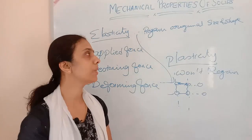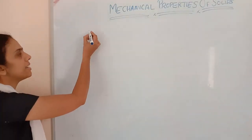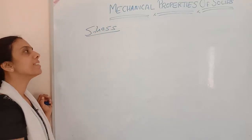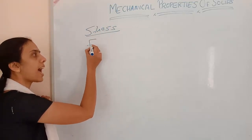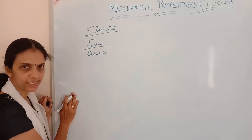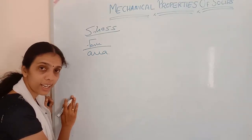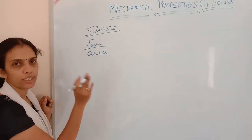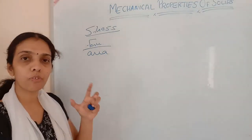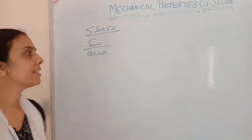Now we are going to study about what is meant by stress and strain. Stress means force acting per unit area — that is called stress. It is the perpendicular force acting per unit area. Physically, the meaning of stress is: how much force is acting in a unit area — that is called stress.